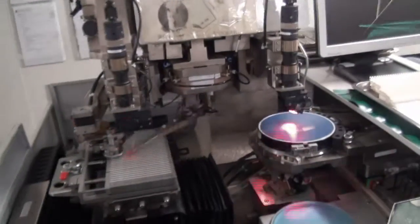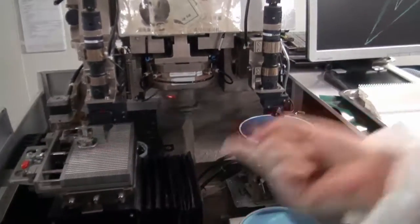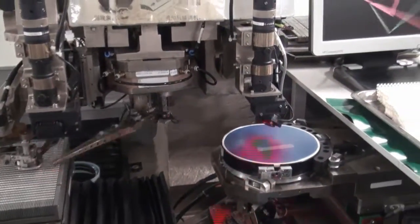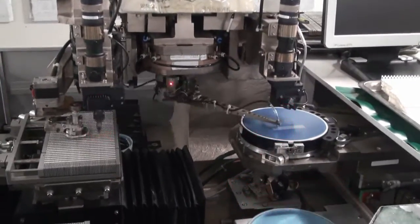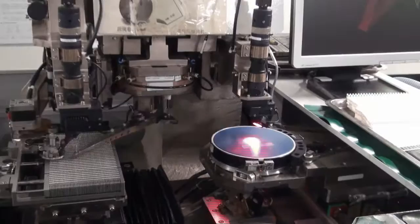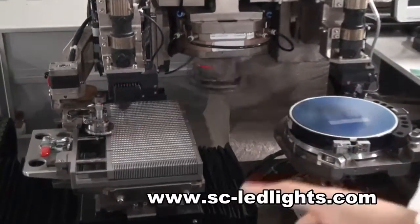As you can see, the left side is the holders and the right side is the chip board. There are many chips on the board. So the die bonder is to take out the chips on the board to the holders.